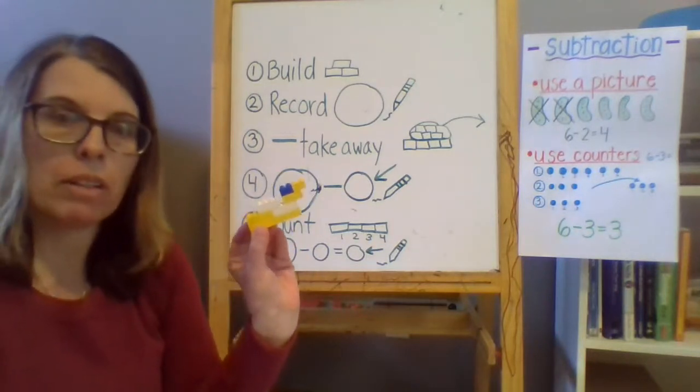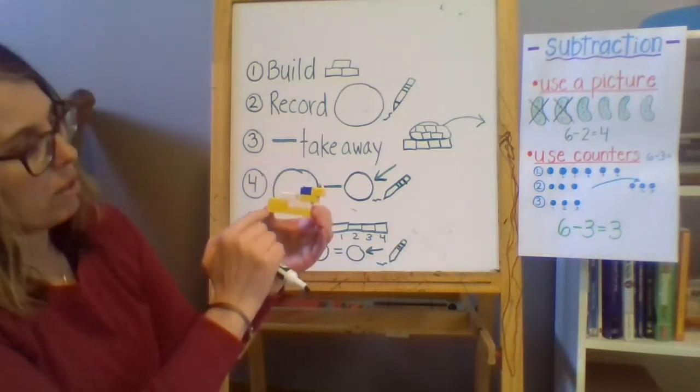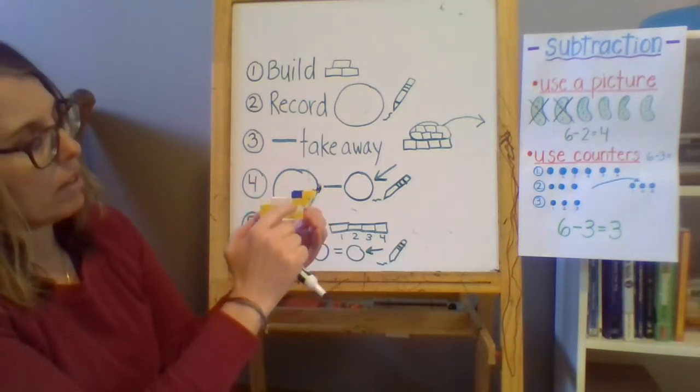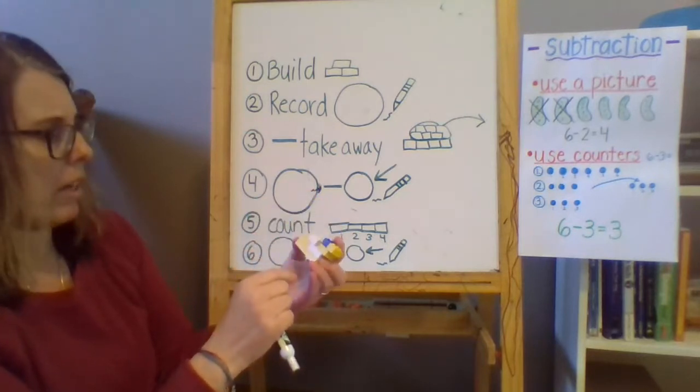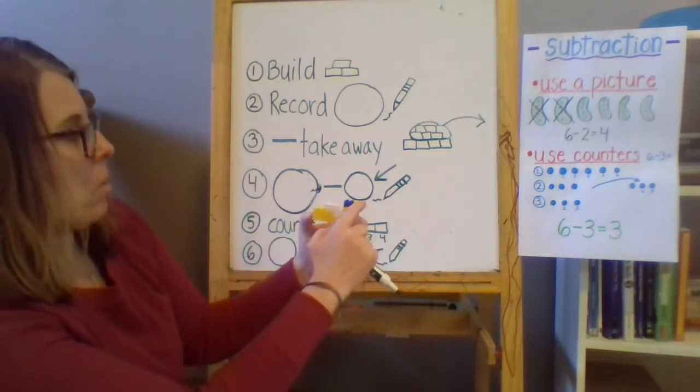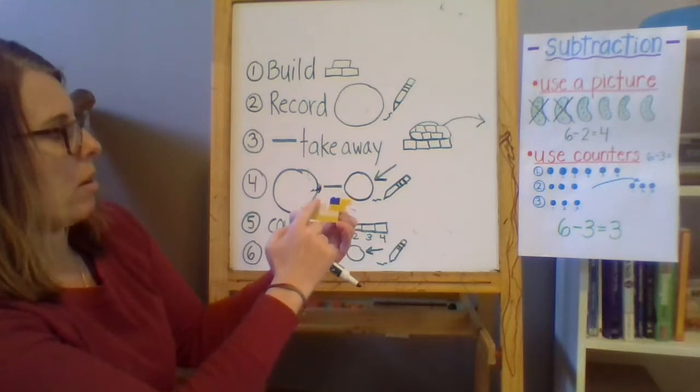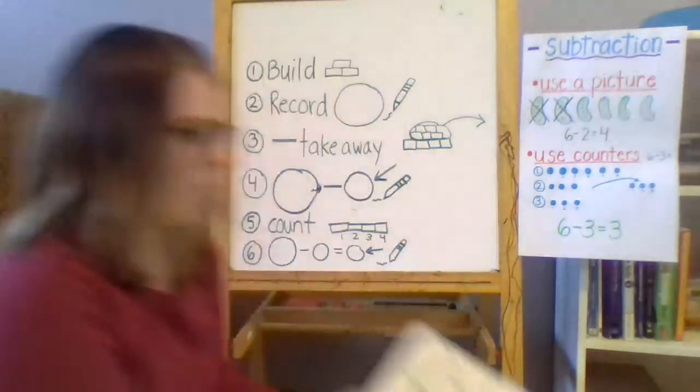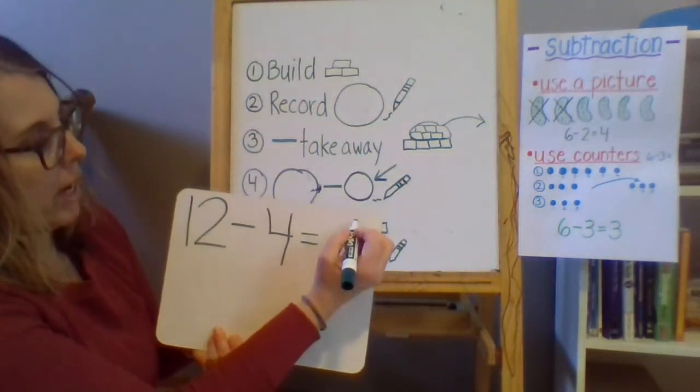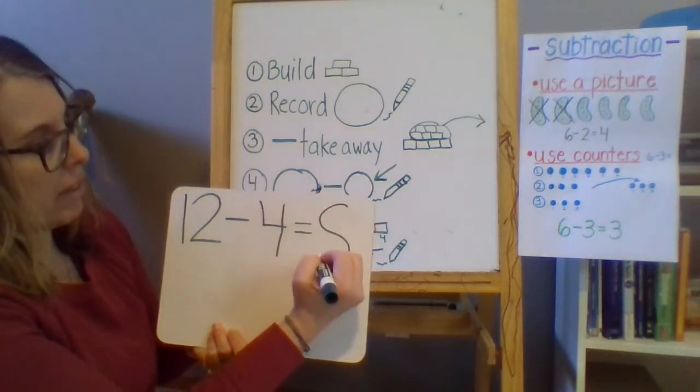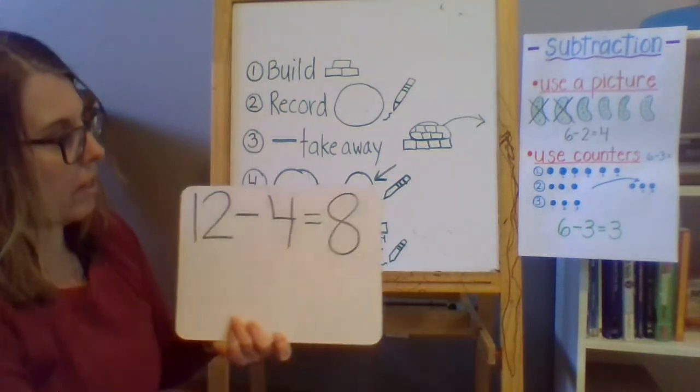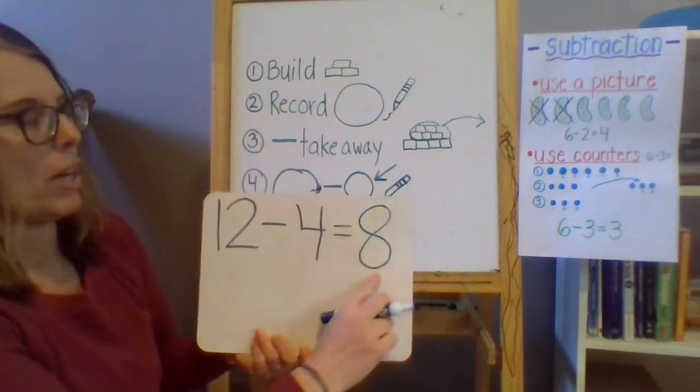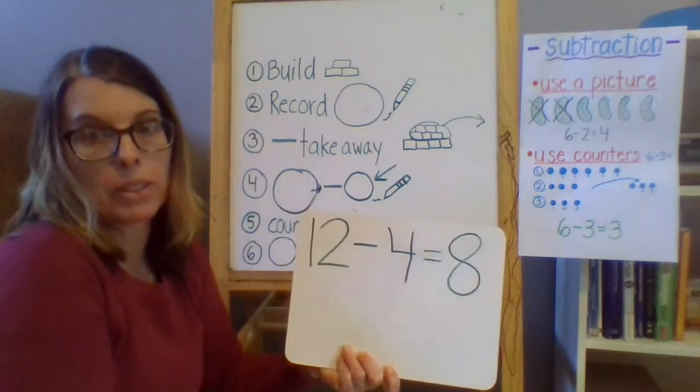I'm going to go ahead and get that equal sign ready for myself. 12 minus 4. Now I have to count how many are left in my original structure. 1, 2, 3, 4, 5, 6, 7, 8. Wait a minute. I don't know if I counted. I'm going to count again. I'm not sure if I counted them all. 1, 2, 3, 4, 5, 6, 7, 8. So it's 8. 12 minus 4 equals 8. Remember an 8? Make an S and close the gate. 12 minus 4 equals 8. So you should always read your equation after you write it just to get some practice with that.